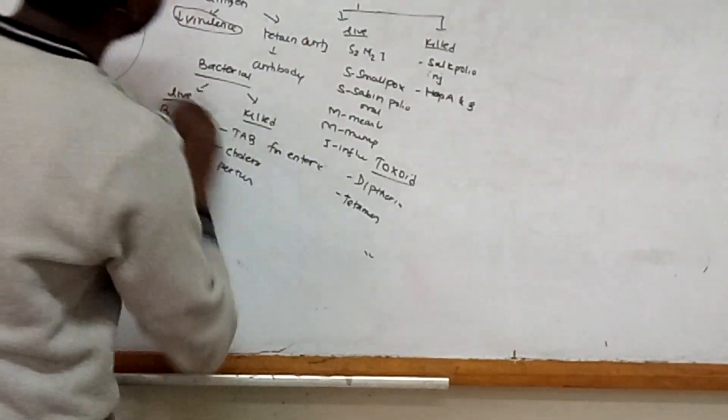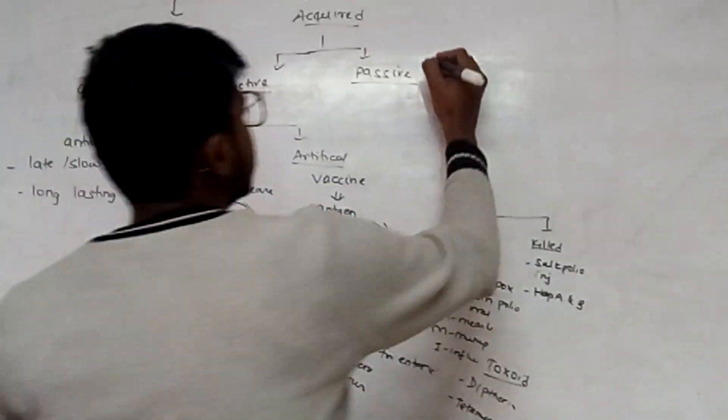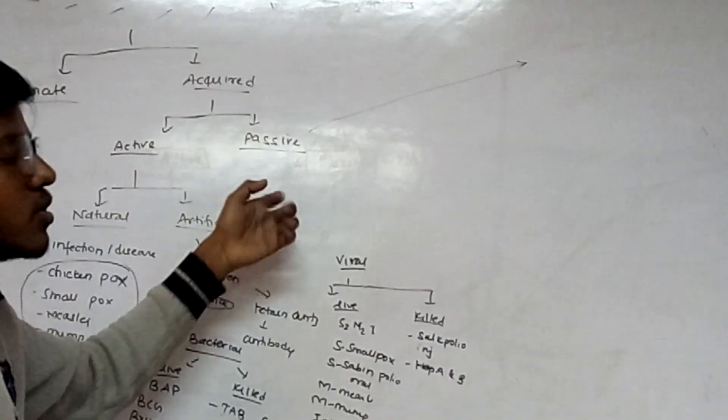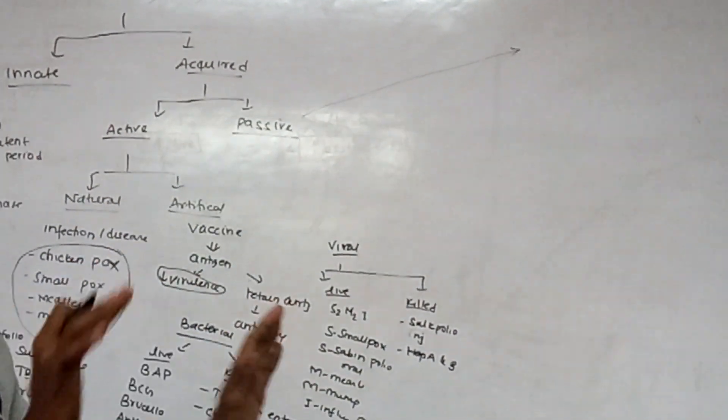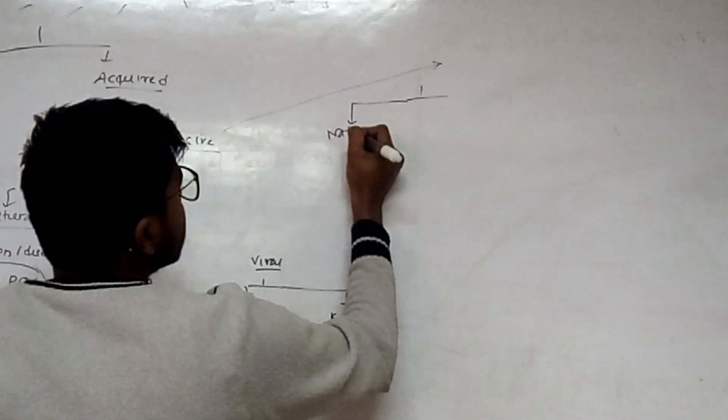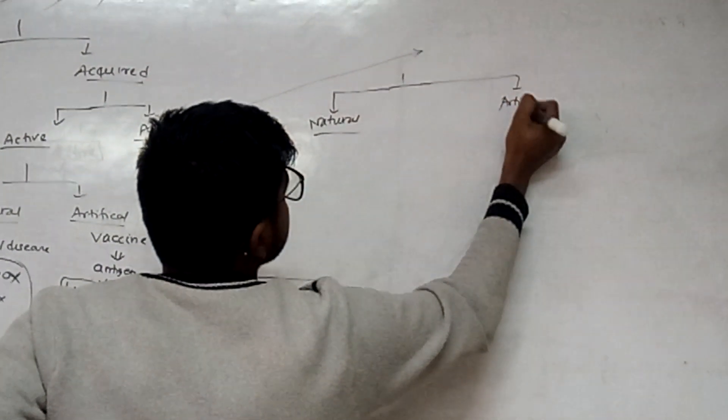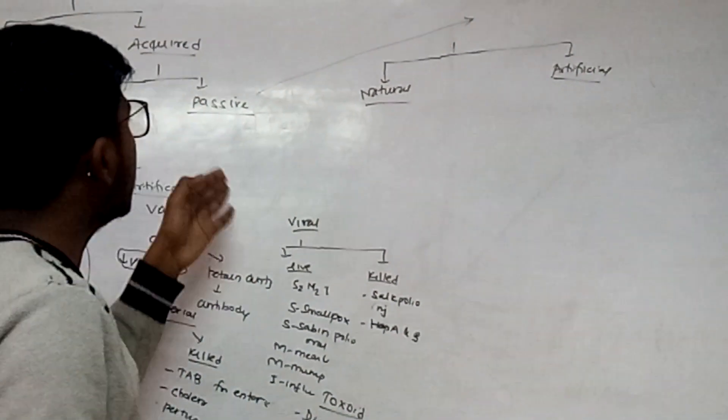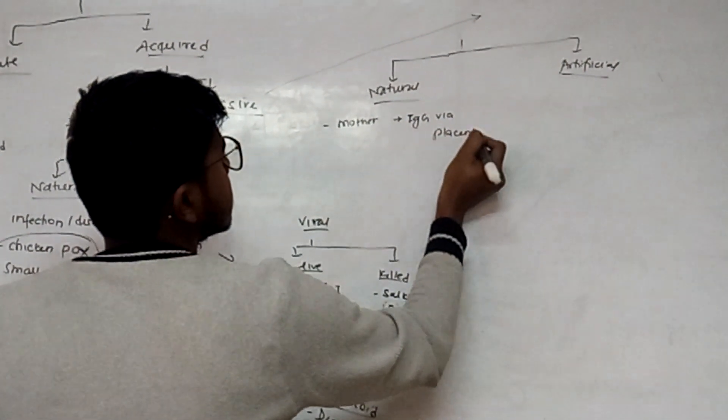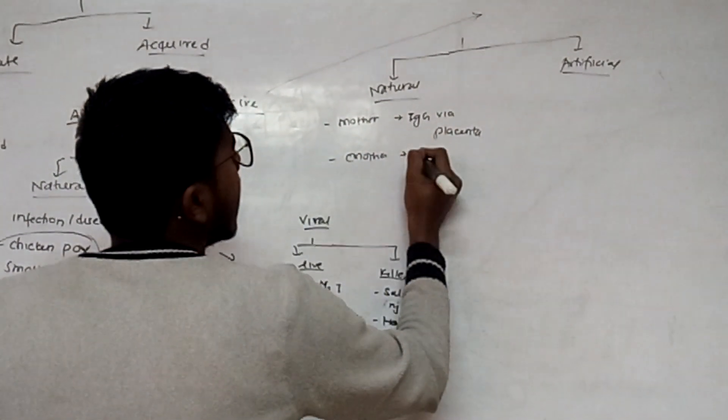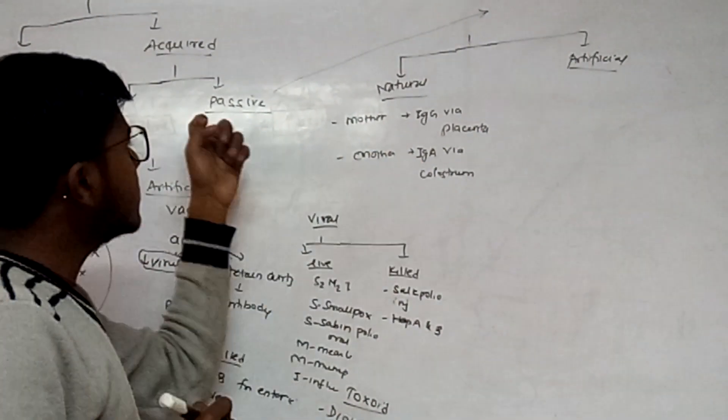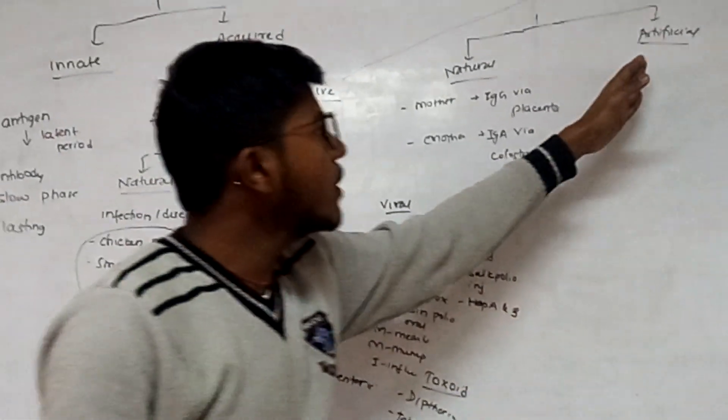This is all about active immunity. Second one is passive immunity. In this our immune system is passive - that is, not forming antibody. There is no antigen exposure, or maybe sometimes antigen exposure but our body is not forming antibody. It also has two courses: natural and artificial. Naturally, how are we getting immunoglobulin or immunity? In the case of mother passing IgG via placenta to the fetus, and mother passing IgA immunoglobulin via colostrum, which is the first pale milk.